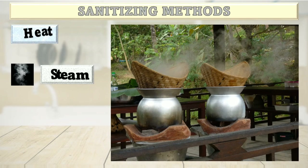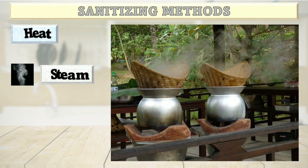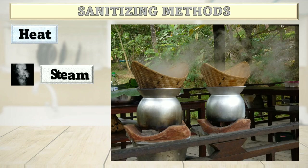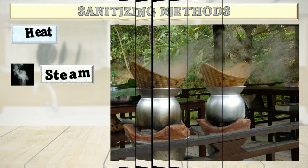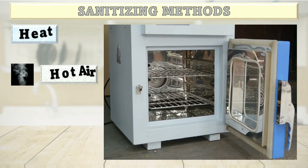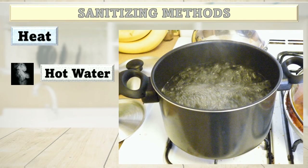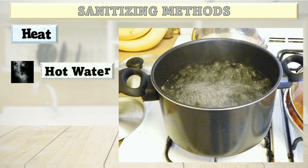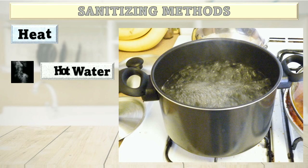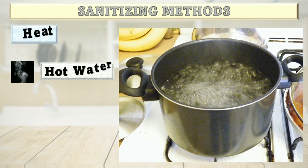Heat sanitizing method using steam: steam is a source of heat used in some industries for sterilization purposes. When steaming, the temperature must be 170 degrees Fahrenheit for 15 minutes or 200 degrees Fahrenheit for about 5 minutes. Hot air can be done for about 20 minutes at 180 degrees Fahrenheit. Hot water as a sanitizer is common among restaurants. The most common method of hot water sanitizing takes place in the final rinse cycle of dishwashing machines. Water temperature must be at least 180 degrees Fahrenheit but not greater than 200 degrees Fahrenheit.